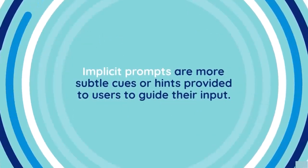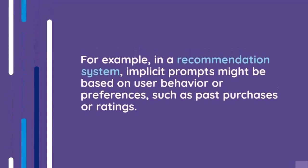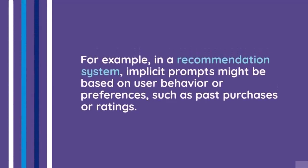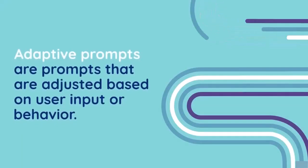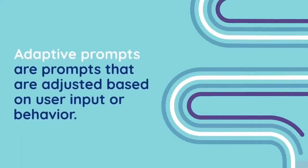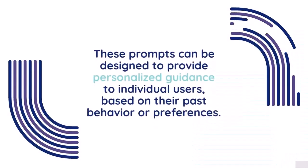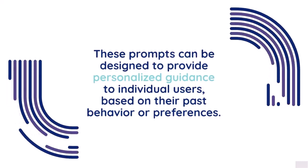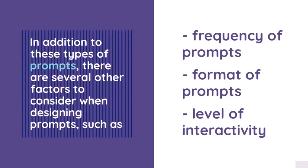Implicit prompts are more subtle cues or hints provided to users to guide their input. For example, in a recommendation system, implicit prompts might be based on user behavior or preferences such as past purchases or ratings. Adaptive prompts are prompts that are adjusted based on user input or behavior, designed to provide personalized guidance based on past behavior or preferences.